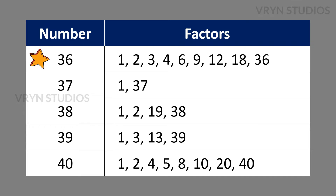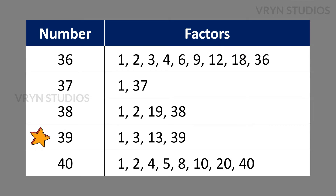The factors for the number 36 is 1, 2, 3, 4, 6, 9, 12, 18 and 36. The factors for the number 37 is 1 and 37. The factors for the number 38 is 1, 2, 19 and 38. The factors for the number 39 is 1, 3, 13 and 39. The factors for the number 40 is 1, 2, 4, 5, 8, 10, 20 and 40.